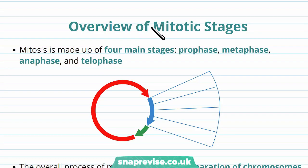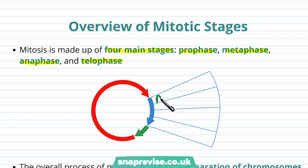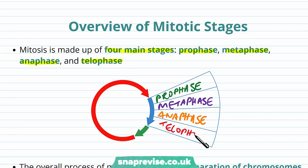The DNA replicates in interphase, but interphase is then followed by mitosis, which has four main stages: prophase, metaphase, anaphase, and telophase. They come in this order and you need to be aware of the different features that happen in each stage. After telophase is finished, we get cytokinesis.